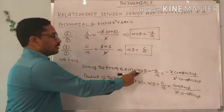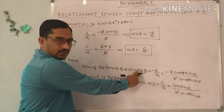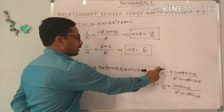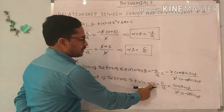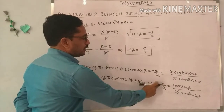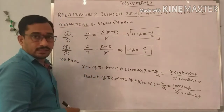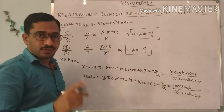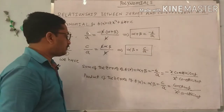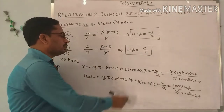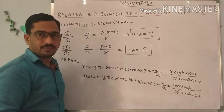To remember: the sum of the zeros equals alpha plus beta equals minus B by A, which is minus X coefficient by X squared coefficient. The product of the zeros equals alpha into beta equals C by A. In exercise 3.3, the first bit problems depend only on this formula.